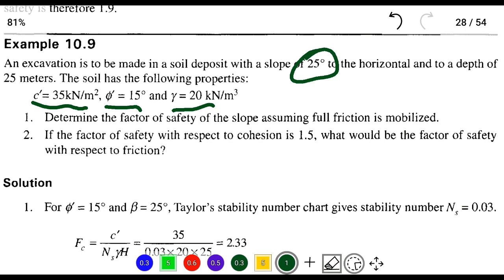We have to find out the factor of safety of the slope assuming full friction is mobilized. Second, if the factor of safety with respect to cohesion is 1.5, what would be the factor of safety with respect to friction?